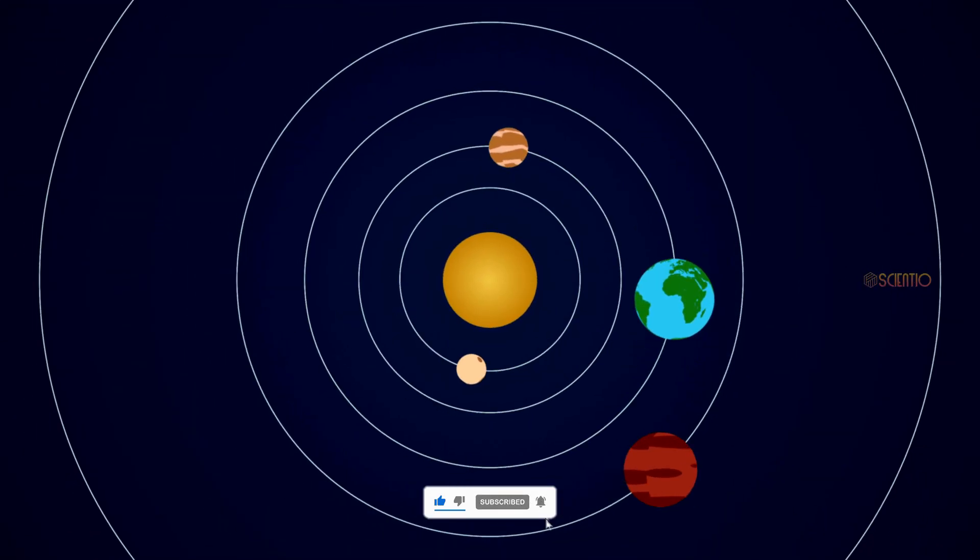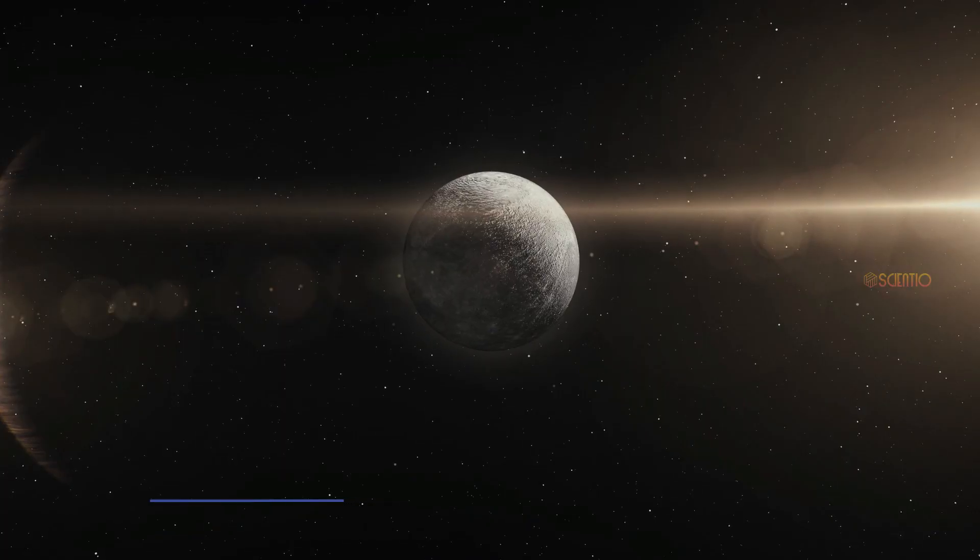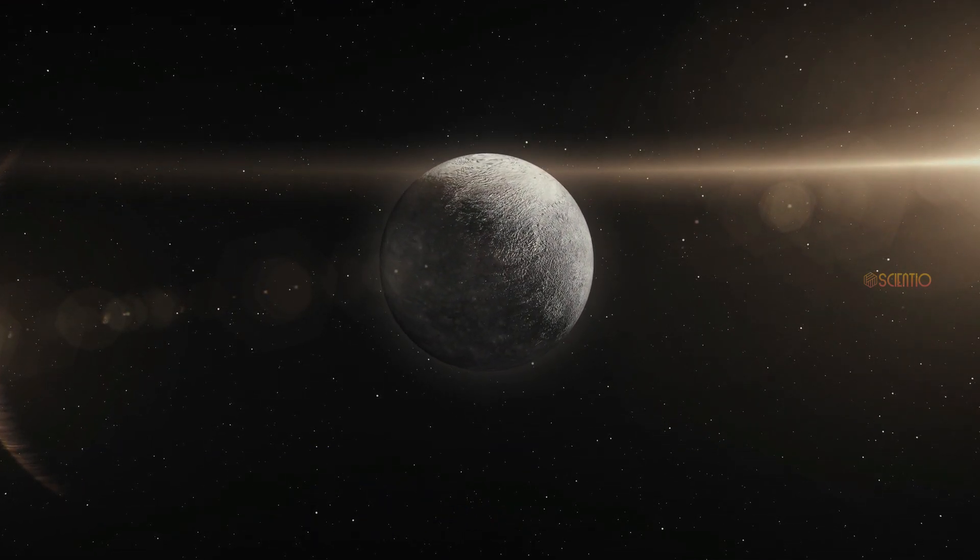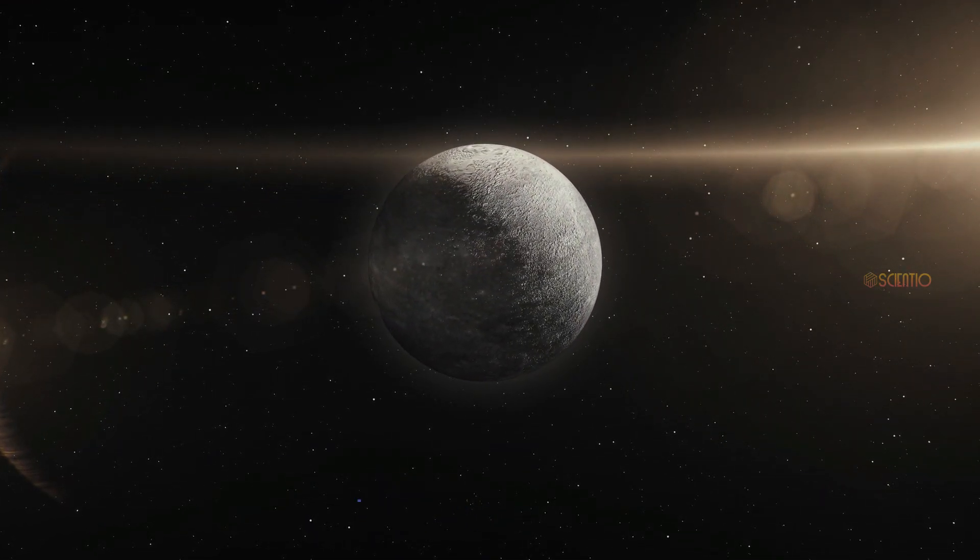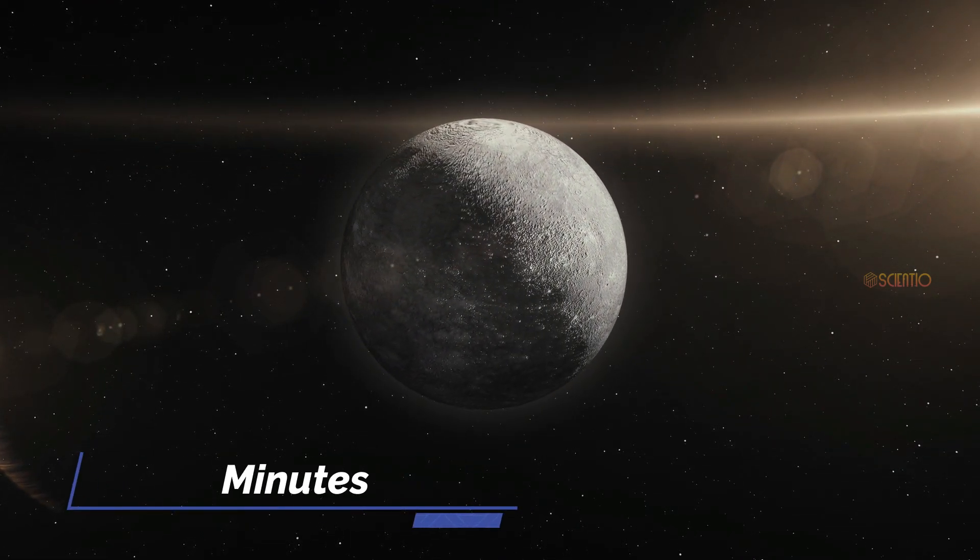Now let's continue our journey to other planets in our solar system. Mercury. The first planet we'll reach is Mercury, the closest planet to the sun. In just 4.5 minutes, we'll witness its barren and rocky surface up close.